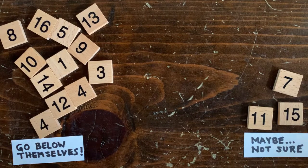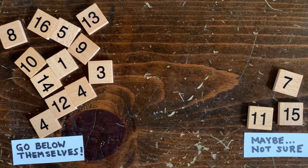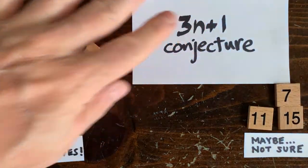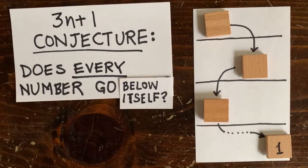We still got some holdouts though. We could test each of these little holdouts right now, but there might be still some other huge holdout not on the table that never goes below itself. It could be at the bottom of some loop that never goes to 1.